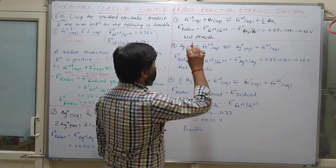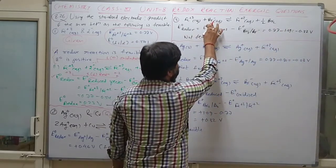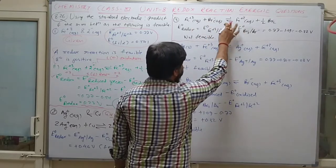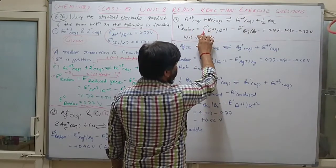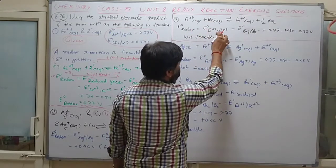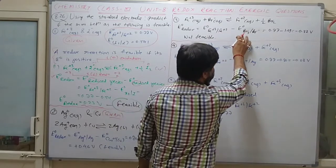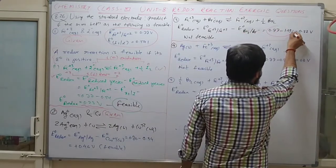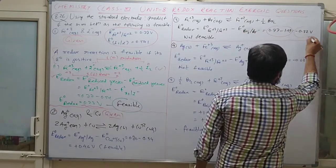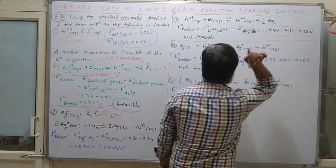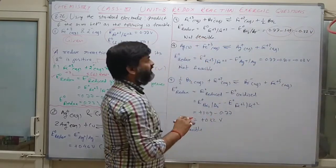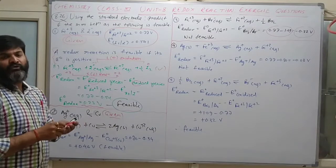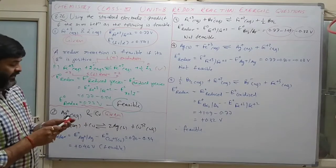Third question: reaction between Fe³⁺ and Br⁻. Write the reaction first. E° redox equals E° of Fe³⁺/Fe²⁺ minus the oxidation potential. After solving with the given data, the value comes out negative. Therefore the reaction is not feasible.